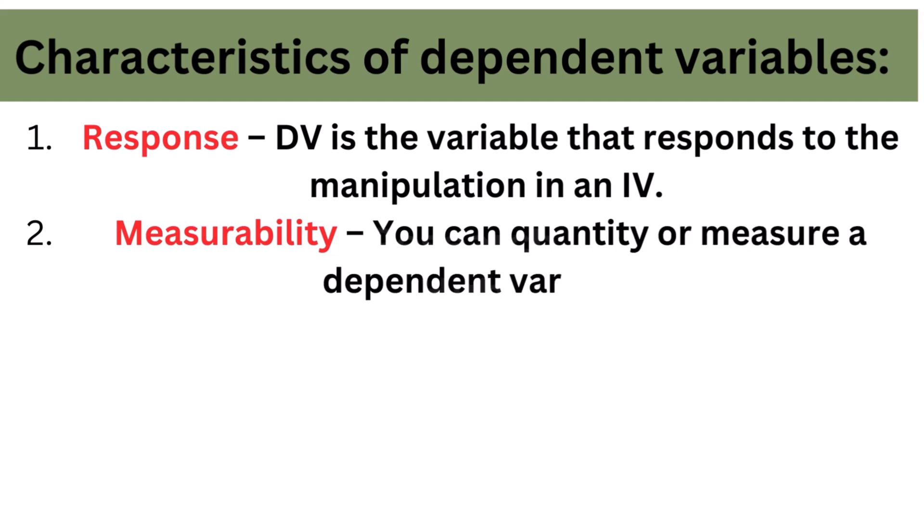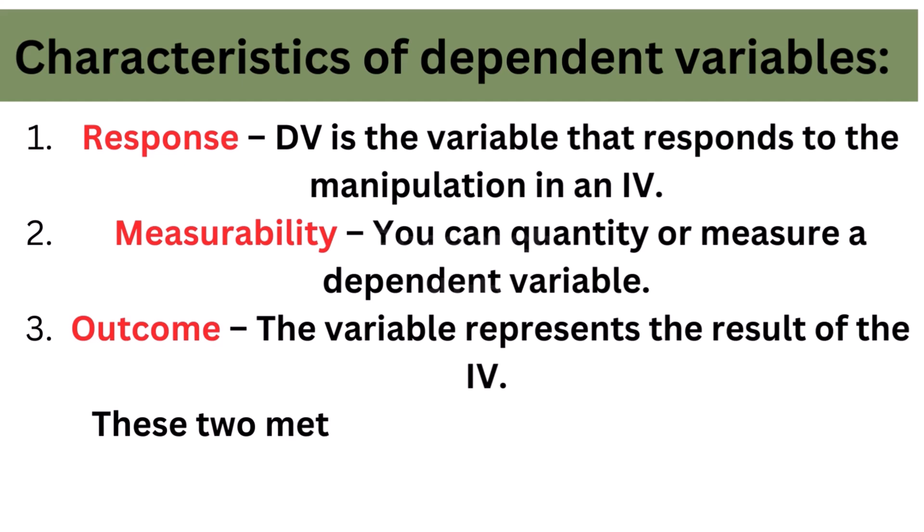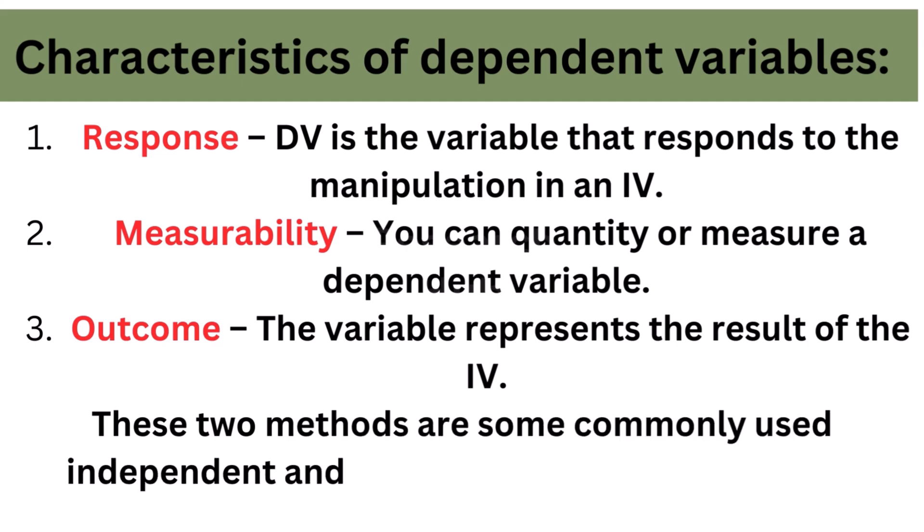Measurability: You can quantify or measure a dependent variable. Outcome: The variable represents the result of the independent variable. These two methods are some commonly used independent and dependent variable identifiers.